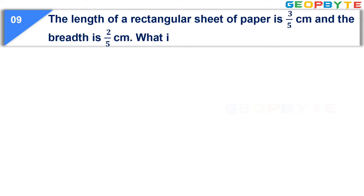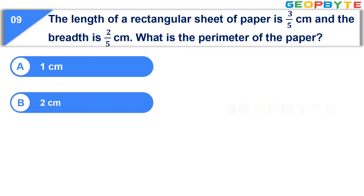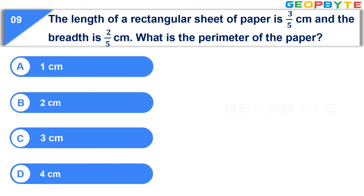The ninth question: the length of a rectangular sheet of paper is 3 by 5 cm and the breadth is 2 by 5 cm. What is the perimeter of the paper? Option A, 1 cm; option B, 2 cm; option C, 3 cm; option D, 4 cm. Your time starts now.